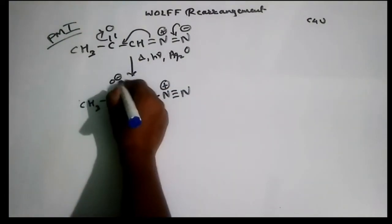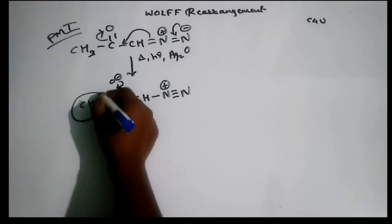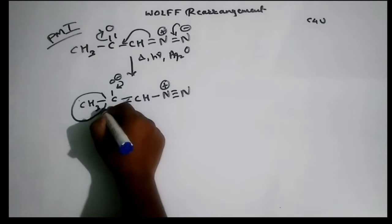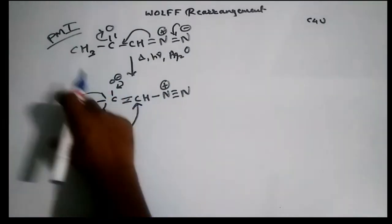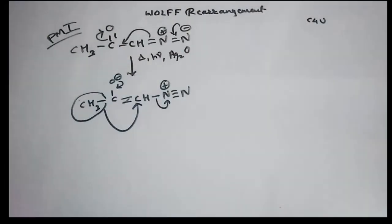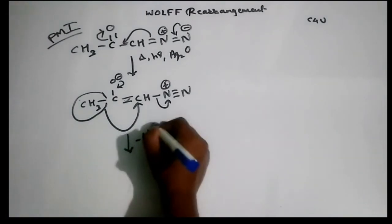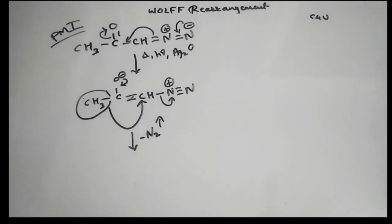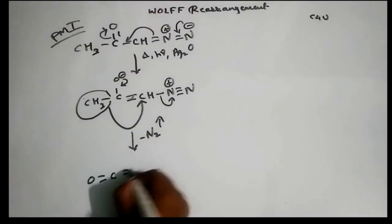Now here is the step which we call as the rearrangement, and the most important step. This methyl group, or any alkyl group that would be there, gets shifted to the carbon along with its pair of electrons and causes this nitrogen to get off. So with minus N2 gas, which is a very stable gas, it becomes a good leaving group. And we are getting here double bond O, C double bond CH2, CH3.